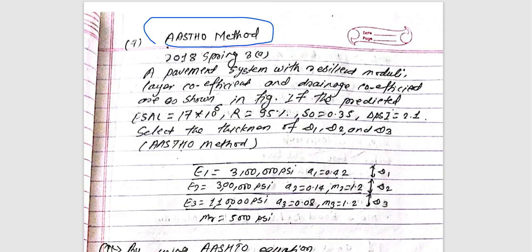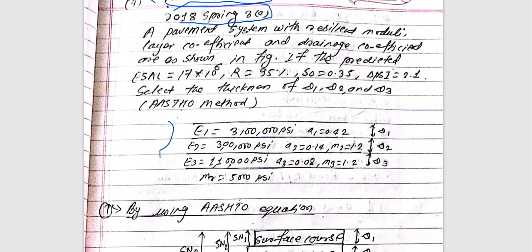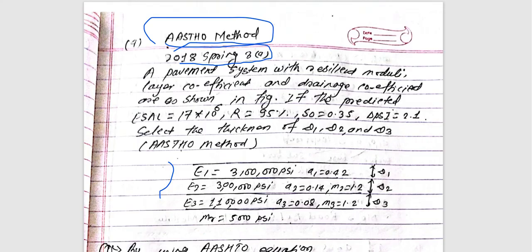This is from 2018 Spring 3. The pavement system with resilient model, layer coefficient and drainage coefficient are shown in the figure.